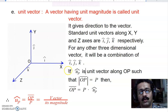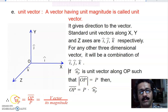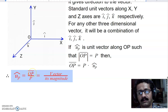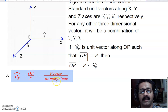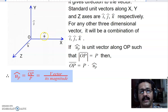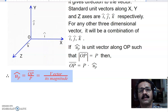The unit vector along any vector OP is calculated by dividing that vector by its magnitude. So the unit vector always equals the vector divided by its magnitude. Using the same formula, a vector can be represented as its magnitude multiplied by the unit vector. For example, one unit along the x-axis is represented by 1 i-cap, and five units along the x-axis is 5 i-cap.